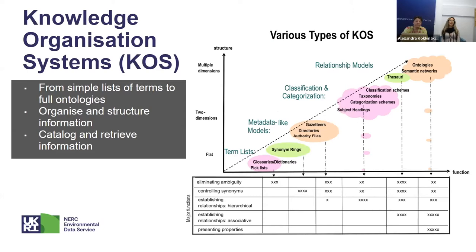Standardized terminologies are knowledge organization systems, also known as KOS. They range from simple lists of terms to full ontologies. Simple lists of terms could be things like glossaries and dictionaries, and they are used to organize information and to provide terminologies to catalog and retrieve information by humans and machines. As this diagram on the right from Vang shows, knowledge organization system entities can be aligned along a gradient of increasing structural complexity and a range of functionalities.